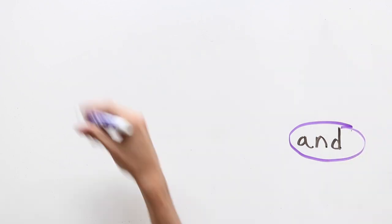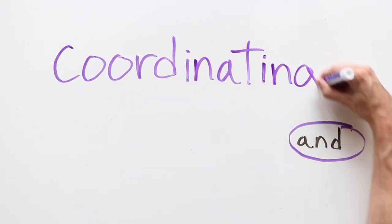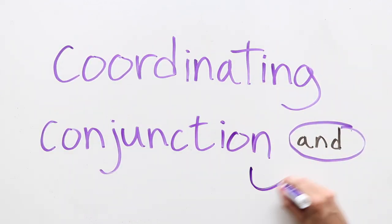You might have spotted the conjunction AND in these examples. This is a coordinating conjunction, which is typically used to join two simple sentences together.